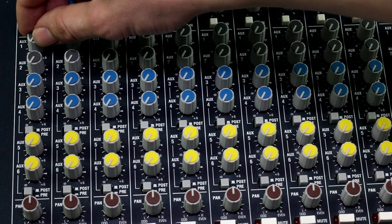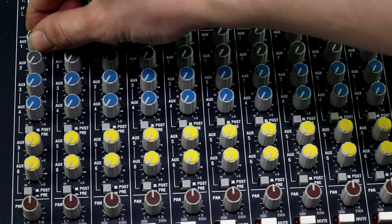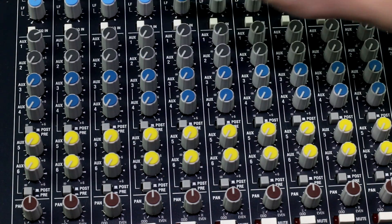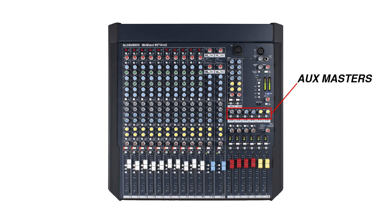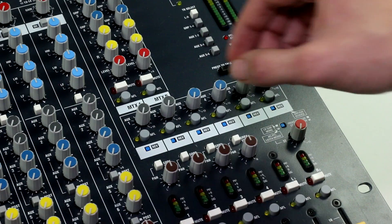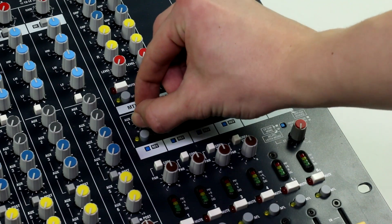One of the most versatile types of outputs you'll find on an audio console is the aux or auxiliary output. You can determine how much of each channel is routed to the auxiliary output using the aux send on each channel. Then you can control the overall output level of the aux output using the aux master fader or the aux master knob.